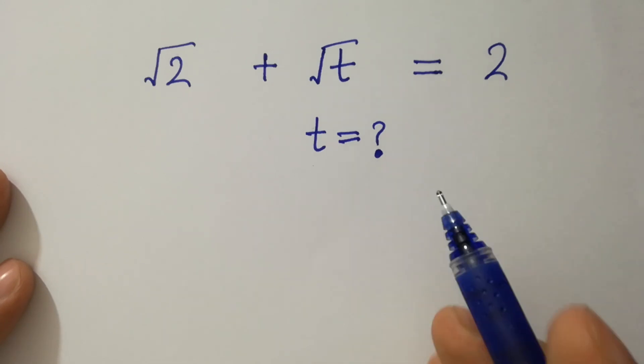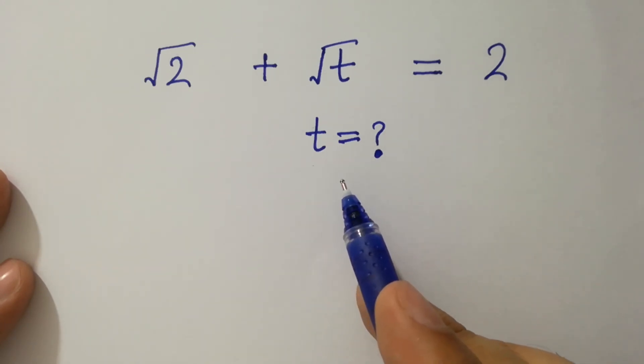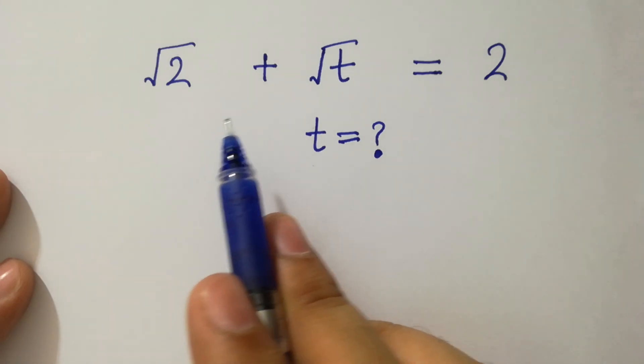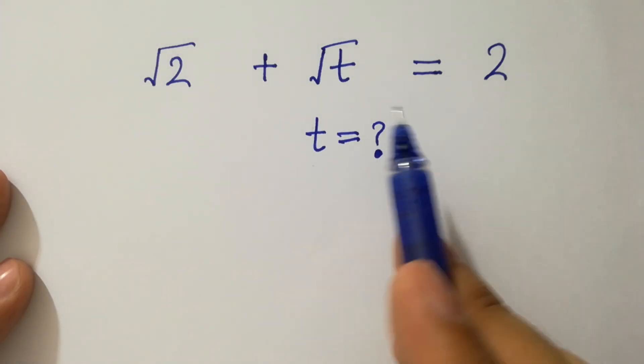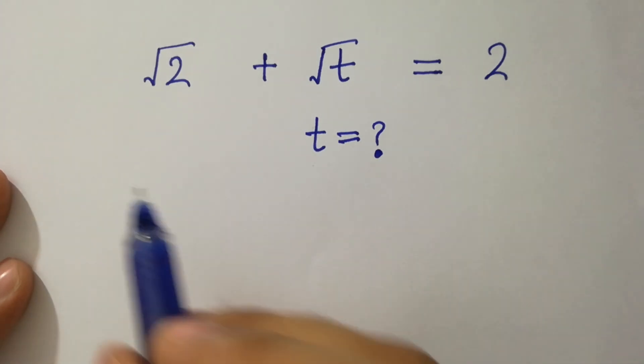Hello friends. Find the value of t if square root of 2 plus square root of t equals 2. Let's have a solution.